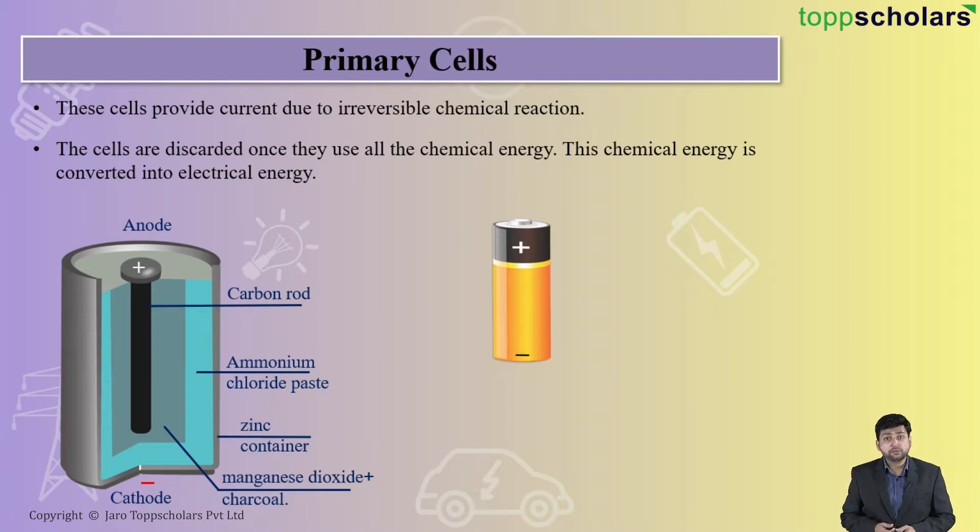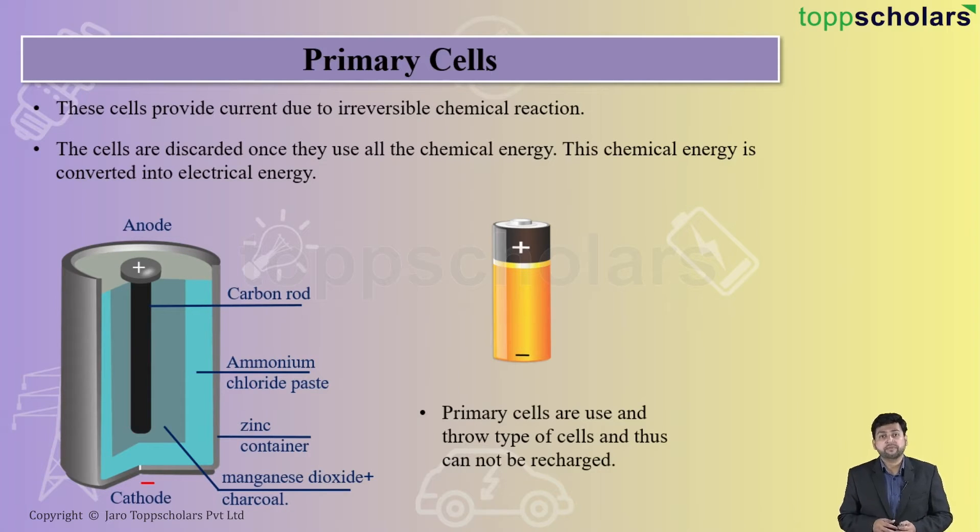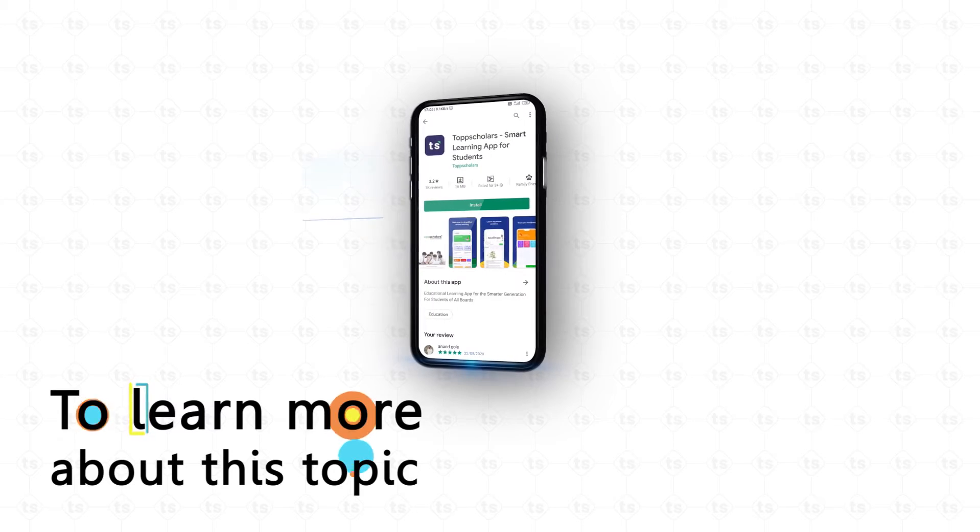So this is nothing but your overall view. We usually observe these types of cells. So these are nothing but the primary cells. Now why they are called as the primary cells? Because once they are used, they cannot be recharged or reused again. We have to throw them away. That is the only reason they are called as the primary cells.